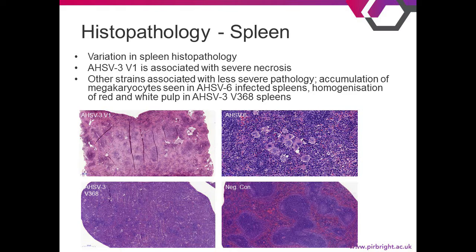Here is the pathology from these mice. Various organs were dissected and stained with hematoxylin and eosin. These are representative spleens from the different groups. A normal uninfected spleen shows white pulp in purple, made up of white blood cells, and red pulp in a pinkish color made up of red blood cells. In AHSV-3 v1 infection, the spleen is almost totally destroyed — there are large swathes of necrosis, apoptosis, and fibrin deposits. Other strains show different effects: in AHSV-6 you see megakaryocyte infection — these are large white blood cells — and in AHSV-3 v368 there's not necrosis as such, but there is homogenisation of the red and white pulp and breakdown of the ordered structure.